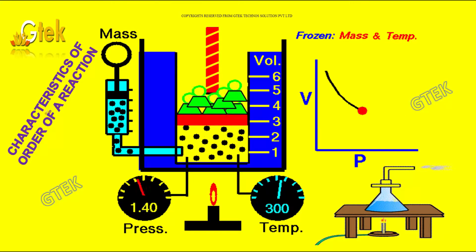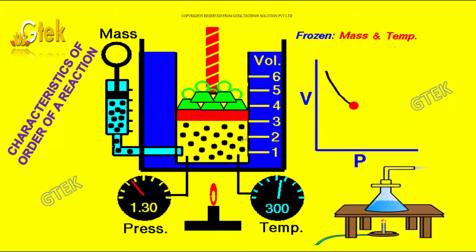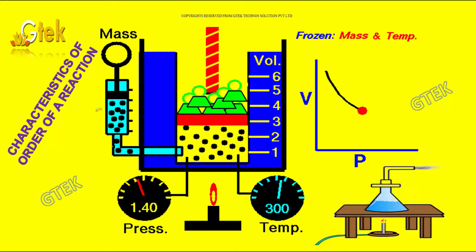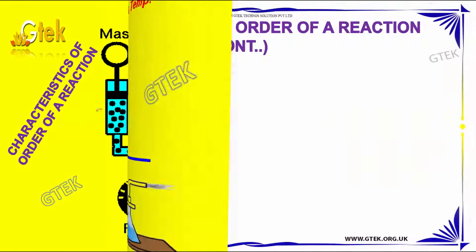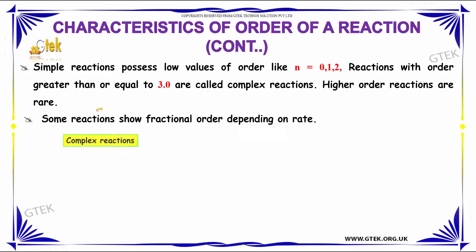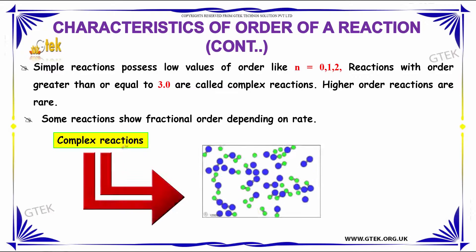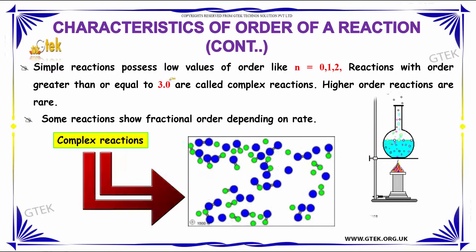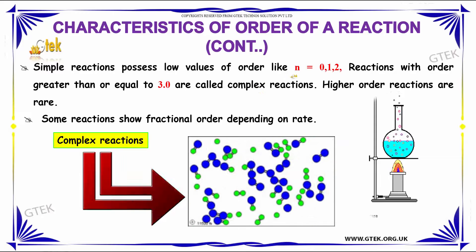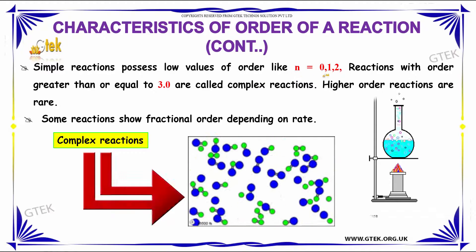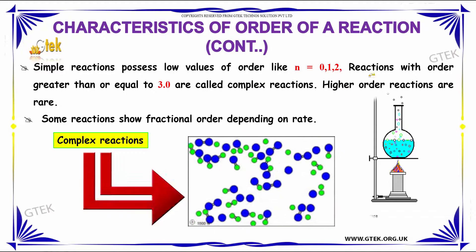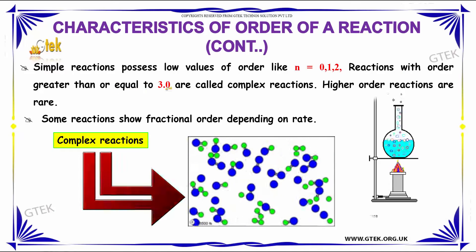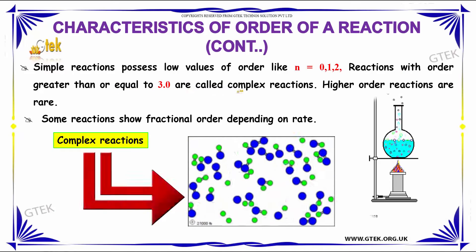Let's discuss some more characteristics of the order of reaction. Reactions commonly possess low values of order: n = 0, 1, 2, and so on. Reactions with an order greater than or equal to 3.0 are called complex reactions.